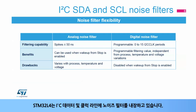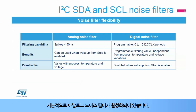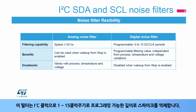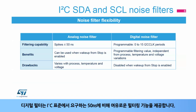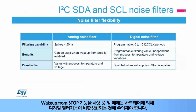The STM32L4 embeds noise filters on I2C data and clock lines. The analog noise filters can filter spikes up to 50 nanoseconds and can be enabled or disabled by software. By default, analog noise filters are enabled. The digital noise filters can be enabled on the SDA and SCL lines instead of the analog noise filters. These filters suppress spikes with a programmable length from 1 to 15 I2C clock periods. The digital filters offer extra filtering capability compared to the 50 nanosecond required by the I2C standard. The digital filter value is fixed by software, while the analog filter value may vary with process, temperature, and voltage.